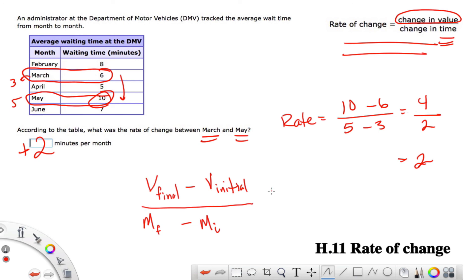And again, we had, on top, we had minutes. Right? The waiting time. Minutes. And then the bottom was in months. So it's minutes per month. So again, this is like that division.